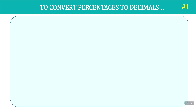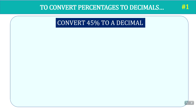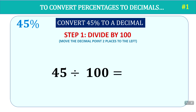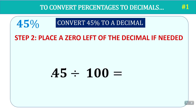So let's look at how to convert a percentage into a decimal. How do we convert 45 percent to a decimal? The first step is to divide by 100, which involves moving the decimal point two places to the left. So instead of doing long division, we can simply use the shortcut. 45 divided by 100 — move once, twice — put the decimal point in place. Step two is to place a zero to the left of the decimal point if needed. Our answer is 0.45.